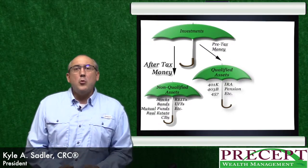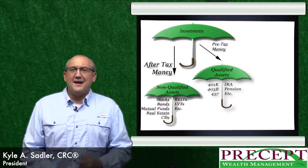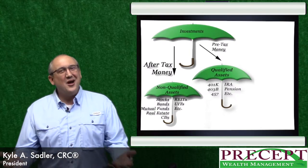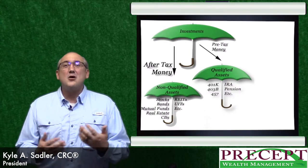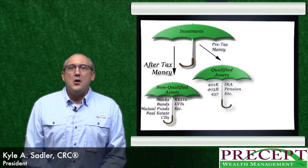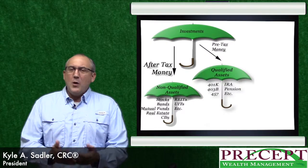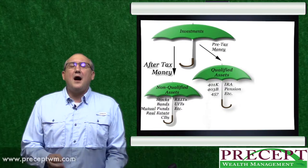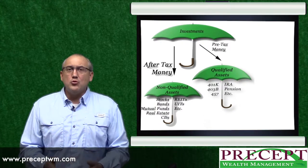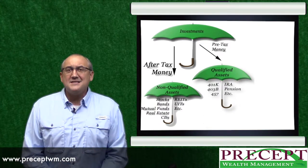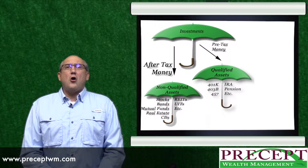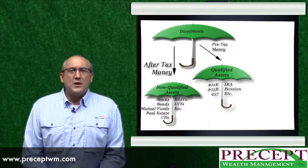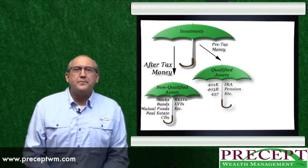Next, we want to look at the second category, which would be the opposite of non-qualified, and that would be qualified assets. What makes this qualified? Who makes it qualified? IRS rules qualify these assets. These are investments like IRAs, pensions, 401Ks — you get the point.